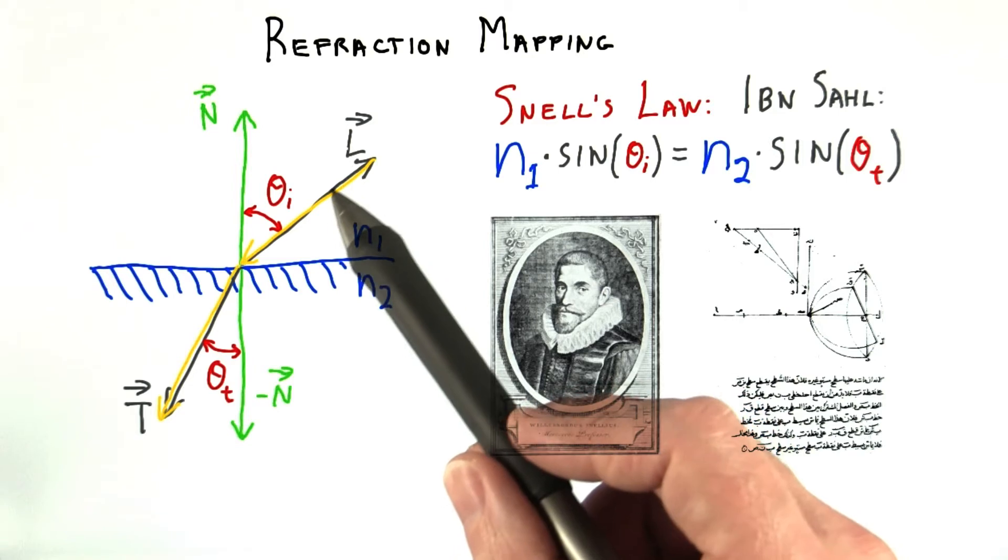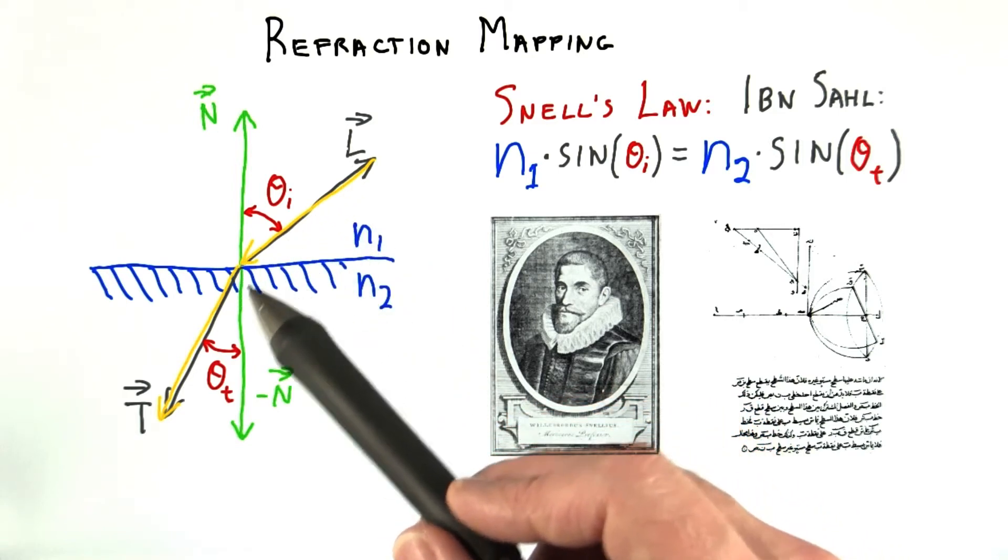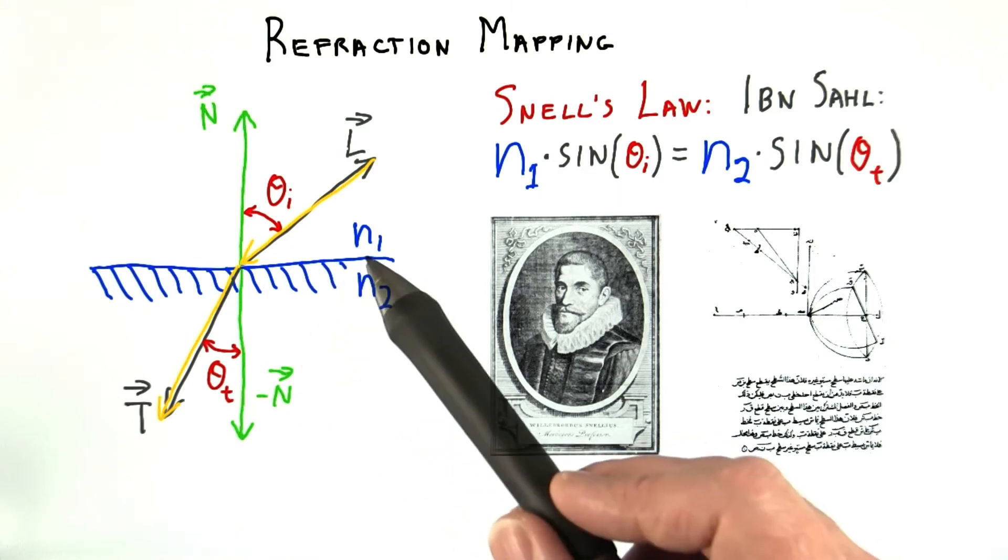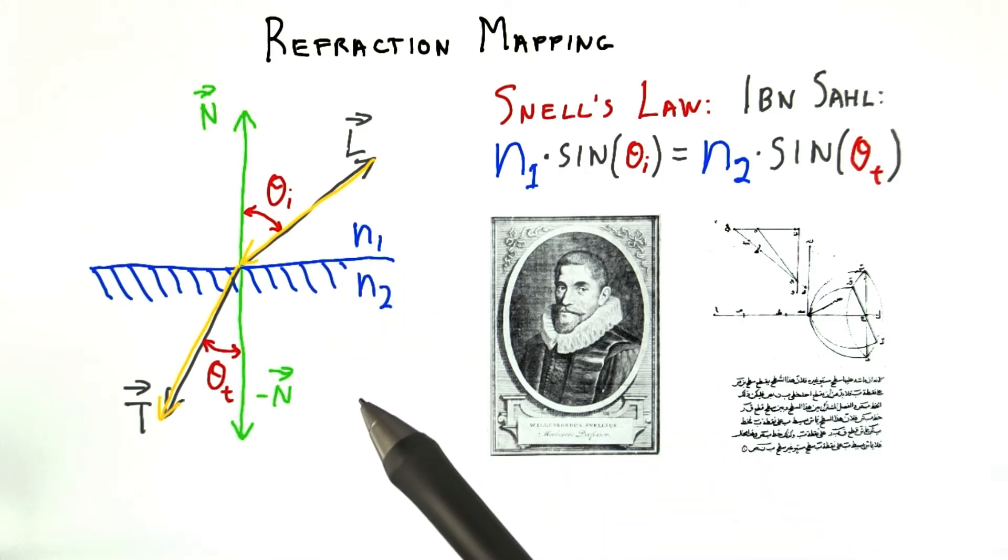In this diagram, we have a ray of light traveling through, say, the air, and hitting a transparent object, say, made of glass. In this equation, N1 and N2 are the index of refraction of the air and glass respectively. The index of refraction is a physical value for a material that is essentially how much slower light travels through it compared to light in a vacuum.